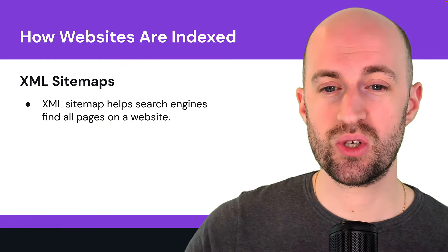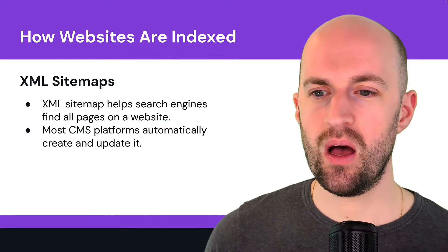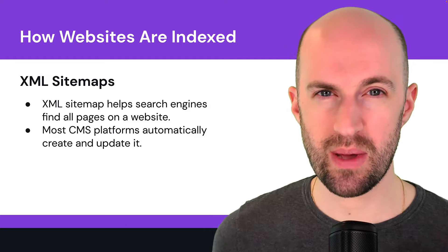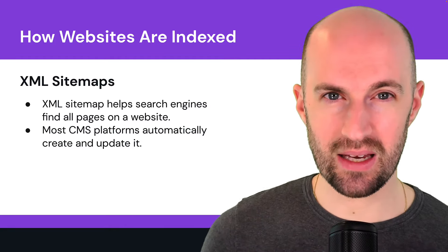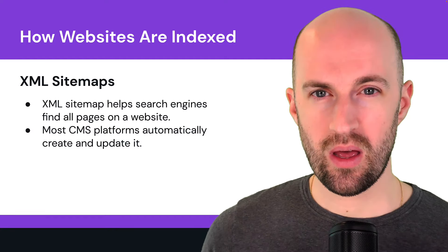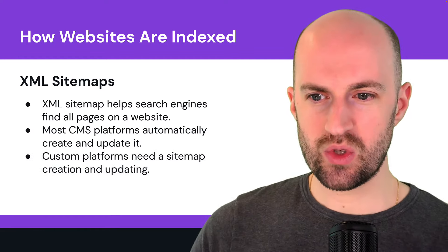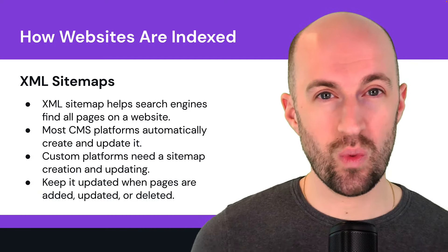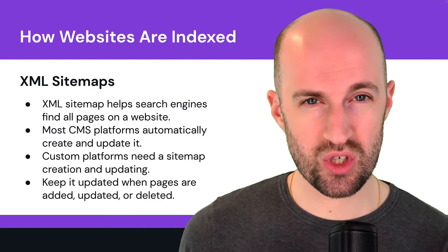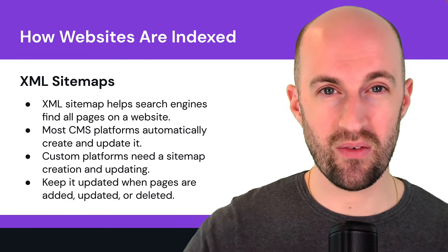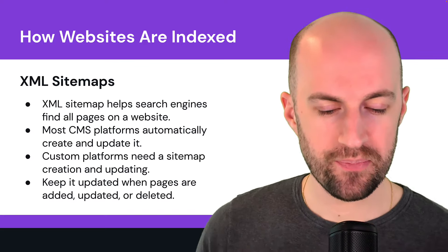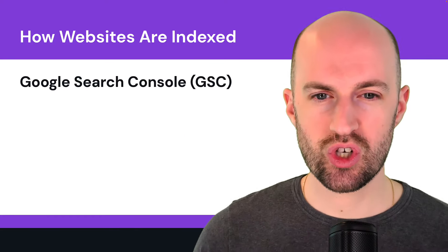XML sitemaps help search engines find all the pages on your website. Generally they're automatically updated if you're using a well-known CMS like WordPress, Wix, or Squarespace. If you have a custom-coded platform, you may need to manually update or use a script to update your XML sitemap. This is important whenever you add a new page, remove a page, or edit a page, so search engines always have an up-to-date map of your website.